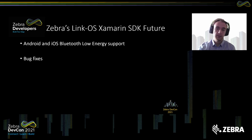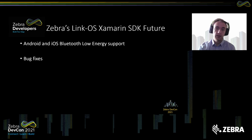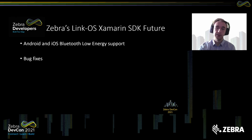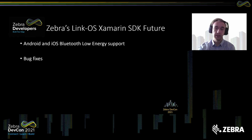The last slide is a preview of what's coming with the Zebra LinkOS Xamarin SDK. We've been working on Android and iOS Bluetooth Low Energy support. It will be released as an add-on to the original SDK, so you can install the regular SDK with normal connections — Bluetooth, WLAN, USB — and optionally install the BLE add-on for Android and iOS. A lot of bug fixes are coming as well. We currently don't have a release date, but it should be coming out soon.